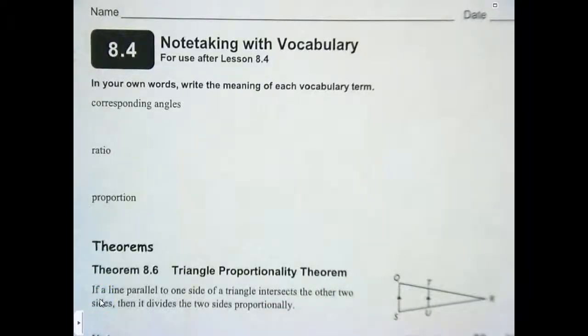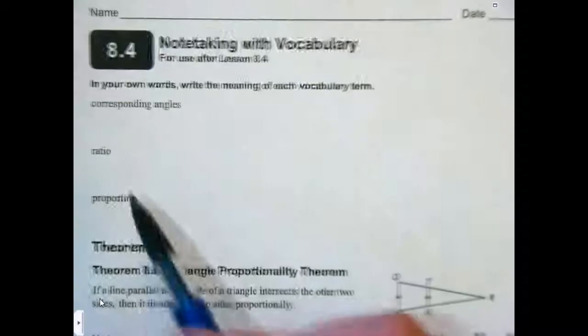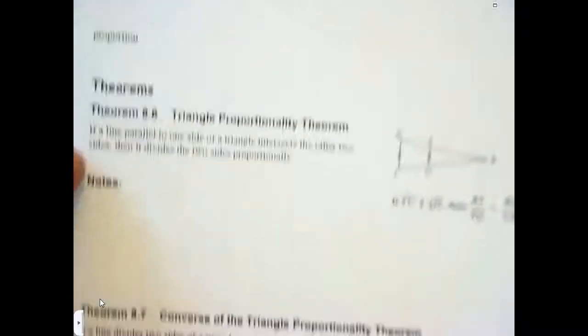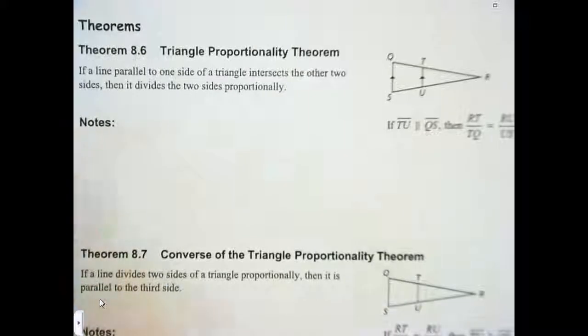Okay, today we're going to finish off chapter 8 by doing 8.4. Section 8.4 deals with triangle proportionality, the various proportionality theorems that we use with triangles. At the top of page 238 of your student journal, there's information about corresponding angles, ratio, and proportions. We've went through each of those. You can summarize those as it relates to these theorems as we progress.